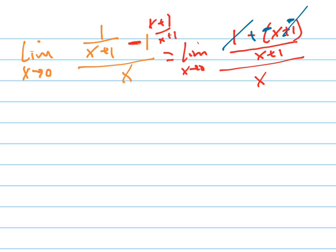1 and the negative 1 cancel out, and I get the limit as x goes to 0 of negative x over x plus 1. That's this up here.